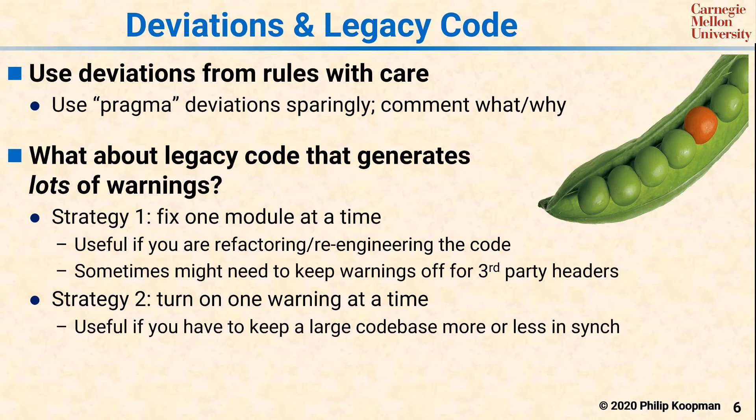Strategy three is to throw the bad code away and write it from scratch, potentially recovering high-level design information. In the long run, this tends to be the most cost effective, especially if you have a bunch of old spaghetti code. However, it's hard to get the time and budget to do a complete clean-slate rewrite. A useful compromise can be to find the handful of bug farms, rewrite those, and then use a more incremental approach for the rest of the codebase.